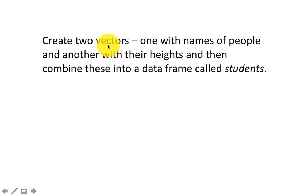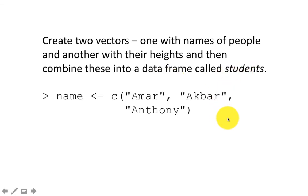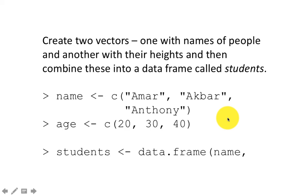Here we are exploring how to create a data frame. Create two vectors — one with the names of people and another with their heights — then combine them into a data frame called students. You've got the names vector, you've got the heights vector, and then you say students <- data.frame(name, height). The idea is the same as what we covered earlier when creating data frames programmatically.